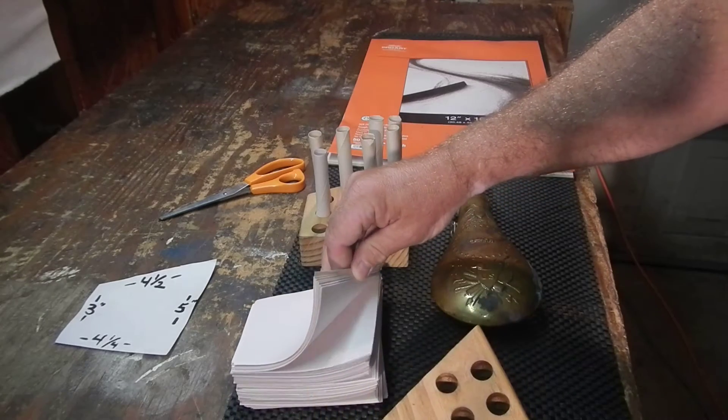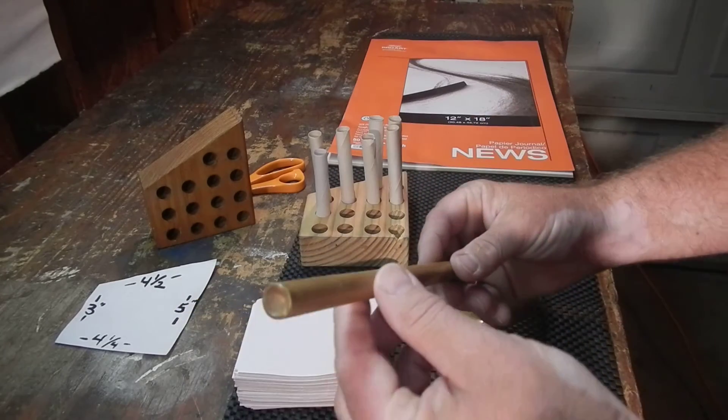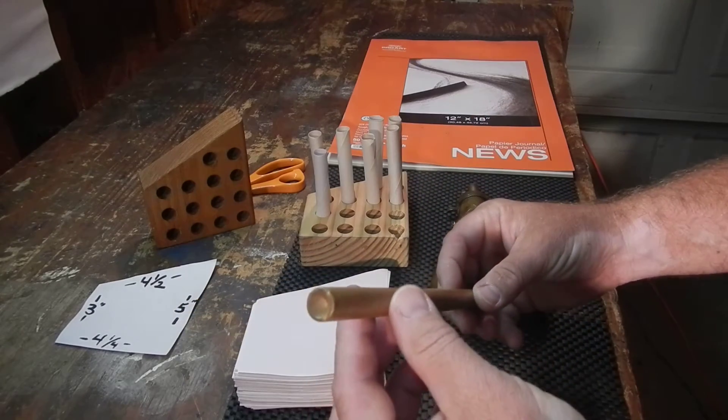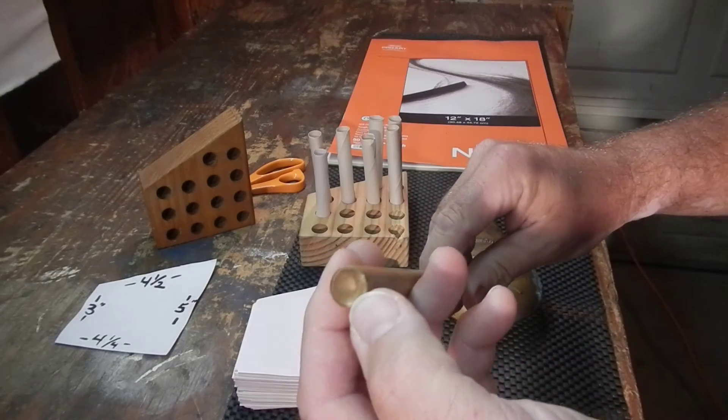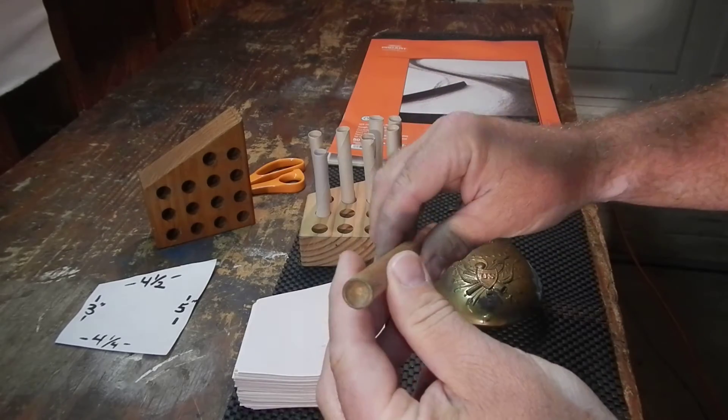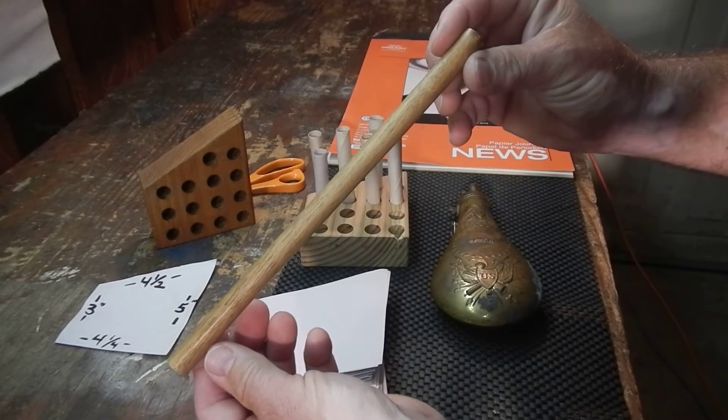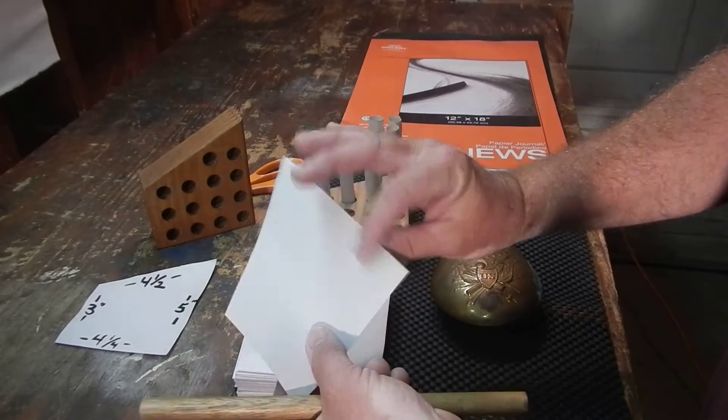Then you need this dowel. This is a half inch dowel about nine inches long or so. I've drilled out the end so it's got a concave hole in both ends.